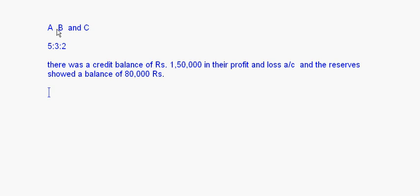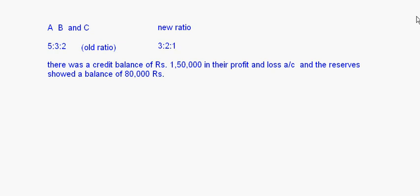This adjustment is done when partners decide to change their profit sharing ratio — just as we did for goodwill. A, B, and C are in the old ratio of 5:3:2 and are deciding to change to a new ratio of 3:2:1. Before coming to this new ratio, the profit and loss account credit balance and the reserves balance must be distributed.